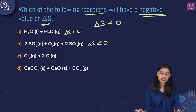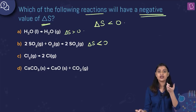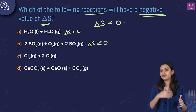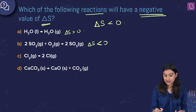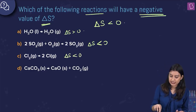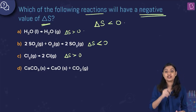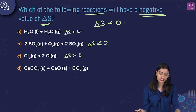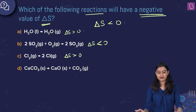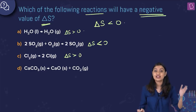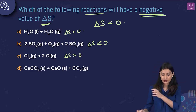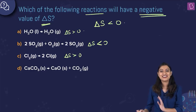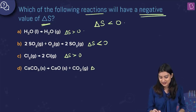Option C: Cl2 giving 2Cl — 1 mole of chlorine gas giving 2 moles of free gaseous chlorine atoms. The number of gaseous moles increased, so delta S is greater than 0. Option D: calcium carbonate solid giving calcium oxide solid plus carbon dioxide gas. Solid giving solid plus gas — entropy is clearly increasing, so delta S is greater than 0.